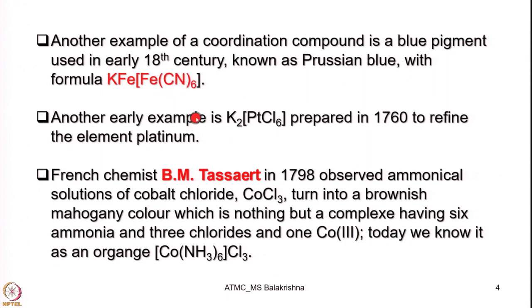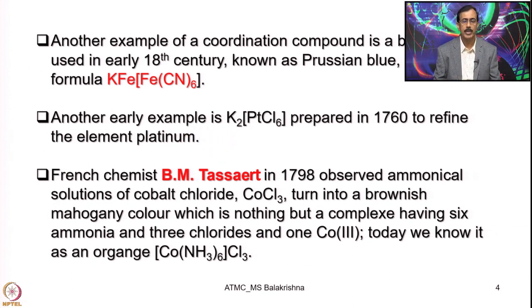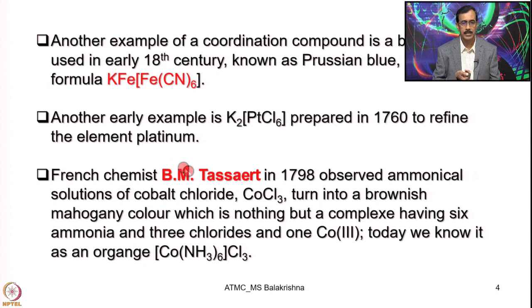Another early example of a coordination complex was potassium hexachloroplatinate, prepared in 1760 to refine the element platinum. French chemist B.M. Tessart in 1798 observed that an ammoniacal solution of cobalt chloride turned into a brownish mahogany colour, which is nothing but a complex having six ammonia and three chloride.